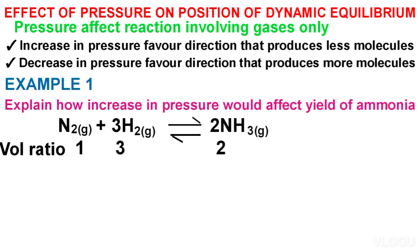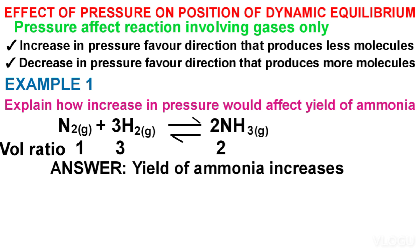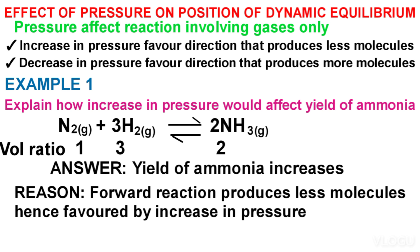Answer: the yield of ammonia increases. Reason: the forward reaction produces fewer molecules, hence it is favoured by increasing pressure. Alternatively: equilibrium shifts from left to right because increasing pressure favours the direction that produces fewer molecules.